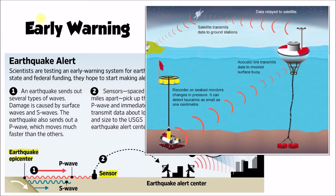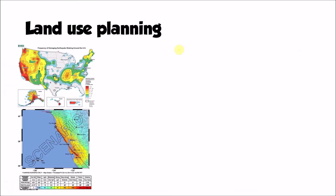The same principle applies to tsunamis, where buoys on the ocean surface or sensors on the seabed detect pressure changes associated with a tsunami and transmit that information via satellite to a monitoring station. For example, the Pacific Tsunami Warning Centre, based in Hawaii, monitors the Pacific Ocean and sends alerts to bordering countries in the event of an earthquake triggering a tsunami. Early warning can be very useful in giving prior notice of an earthquake or tsunami.